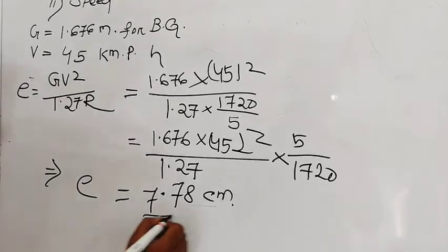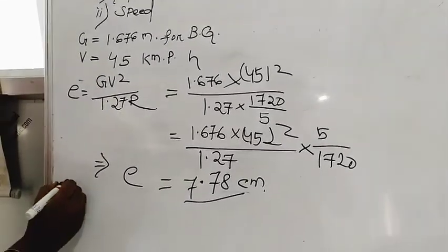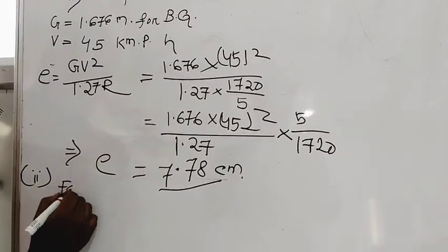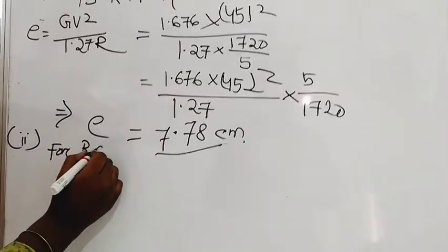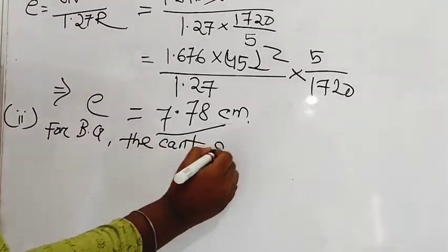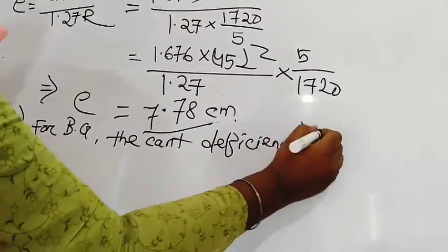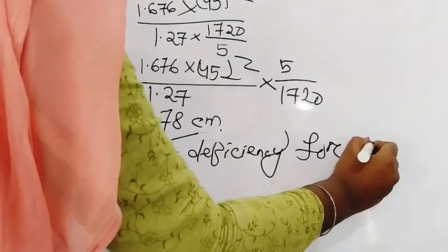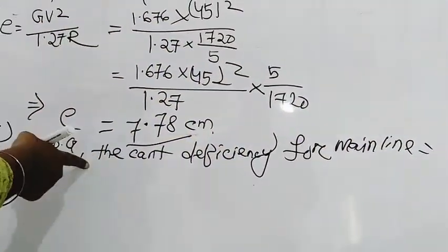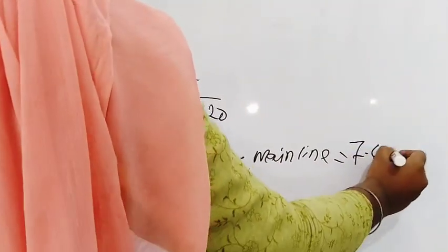We will calculate the cant deficiency for the main line. The cant deficiency for the main line is 7.6 cm.